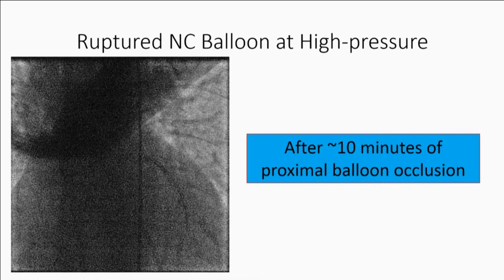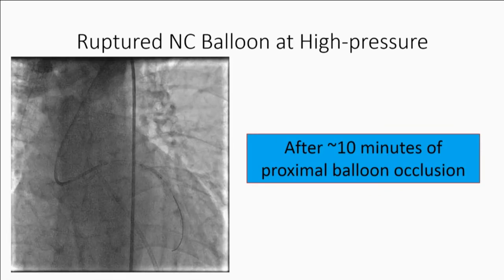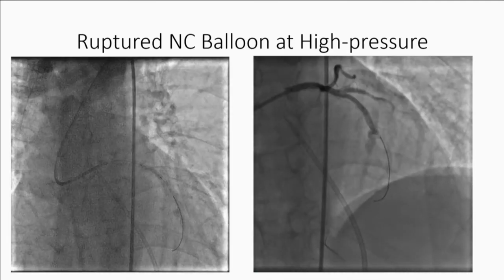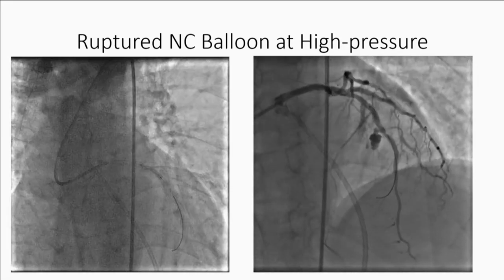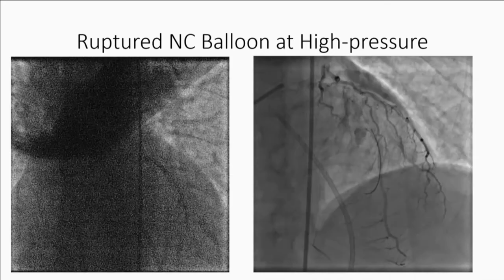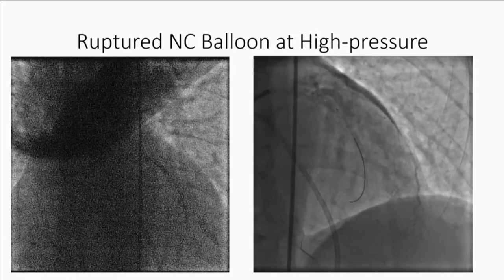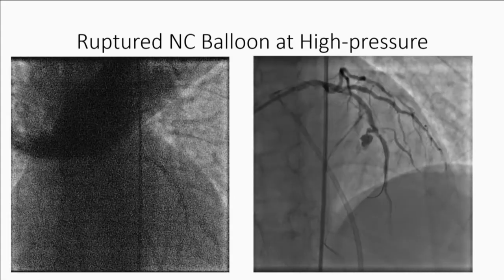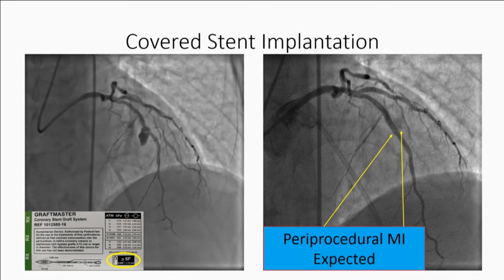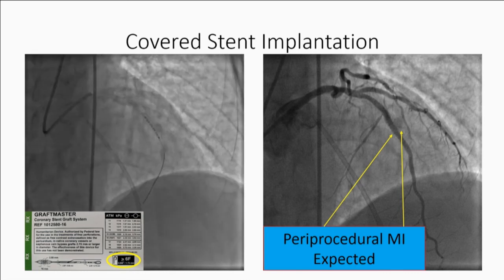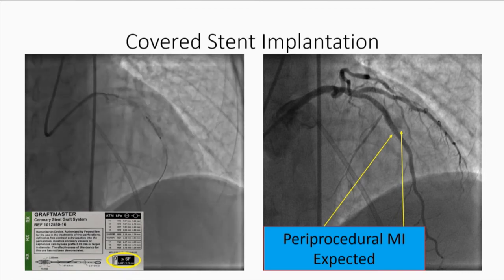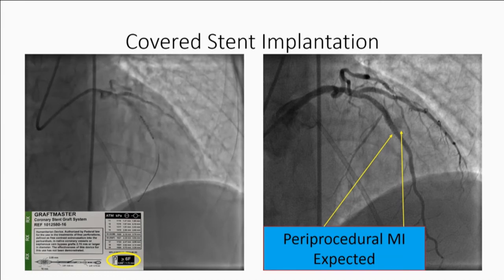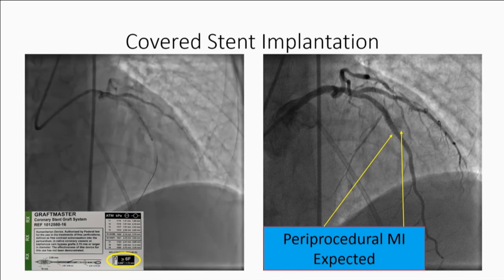We also auto-transfused this patient. After about 10 minutes of proximal balloon occlusion — which is how my partner handles these — you can see on this angiogram that the perforation was actually much larger and more wide open initially, but this is after 10 minutes of balloon occlusion. The ACT at this point was about 230 with no extra antithrombotics given. The decision was made to implant a covered stent. The GraftMaster can be delivered via 6 French guide, so you don't need to upsize. However, a large septal and a large diagonal were lost, leading to periprocedural MI. The patient did well outside of that.